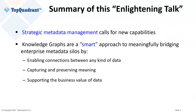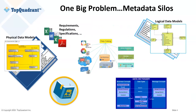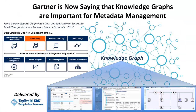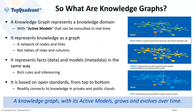One big problem is that with all the different approaches and products available, we end up with disconnected metadata silos. These silos don't help make data more valuable, usable, searchable, or discoverable. Gartner is now saying that knowledge graphs are important for metadata management — metadata management must span catalogs, glossaries, lineage, rules, semantic connections, and more. Spanning these things requires connecting them, and that is what a knowledge graph is for.